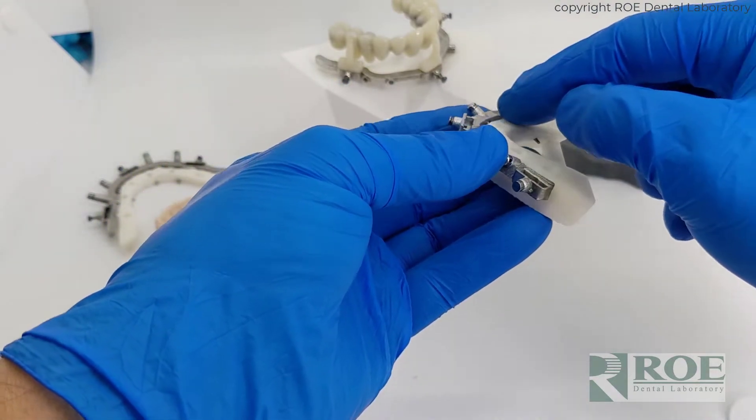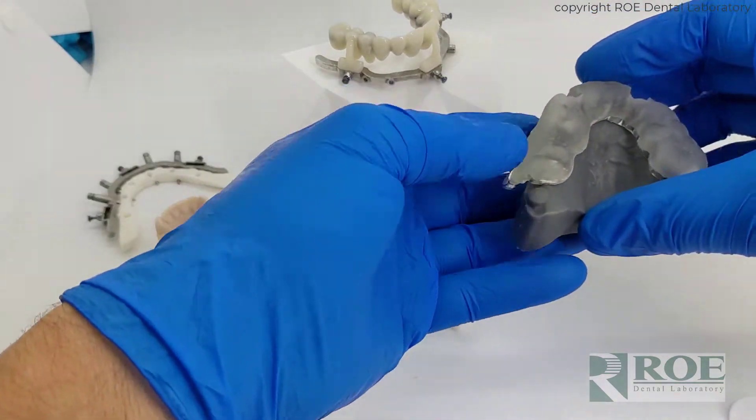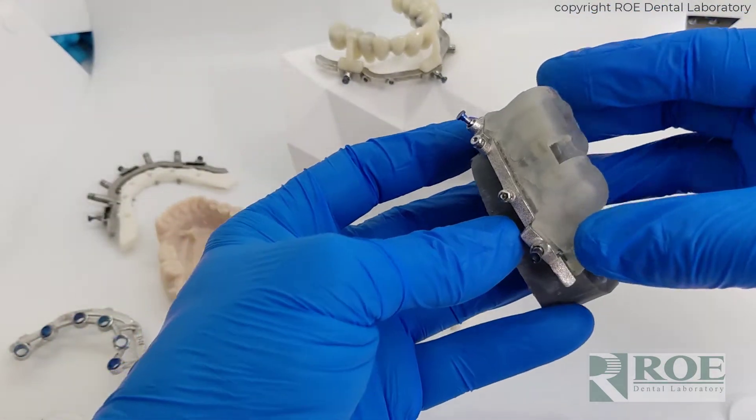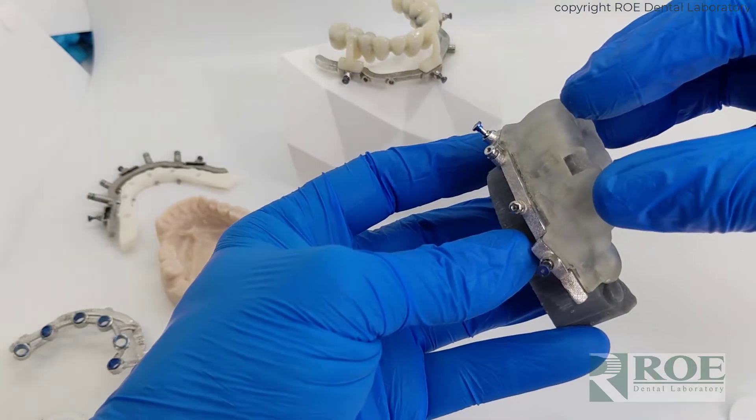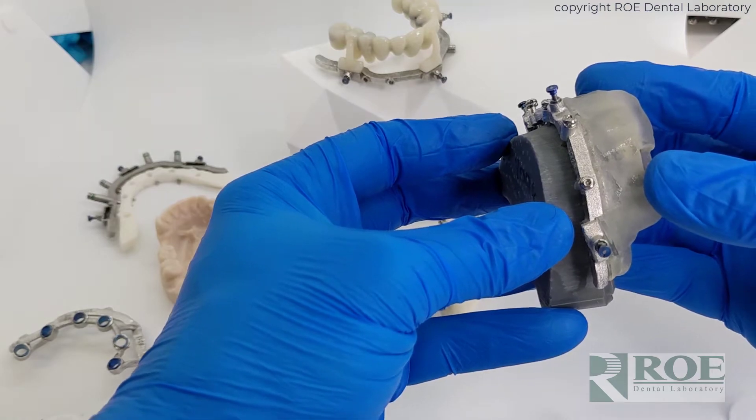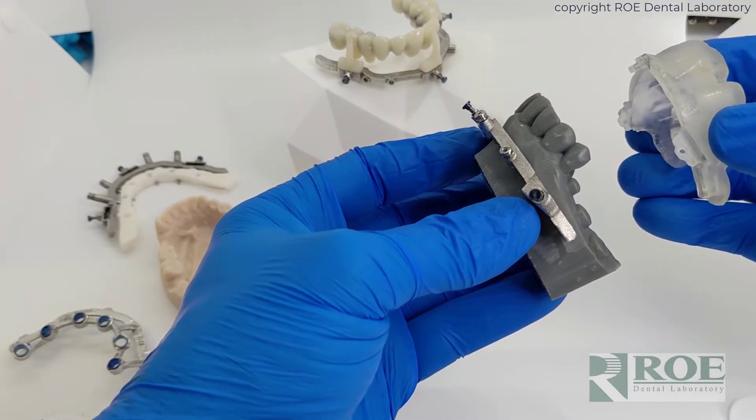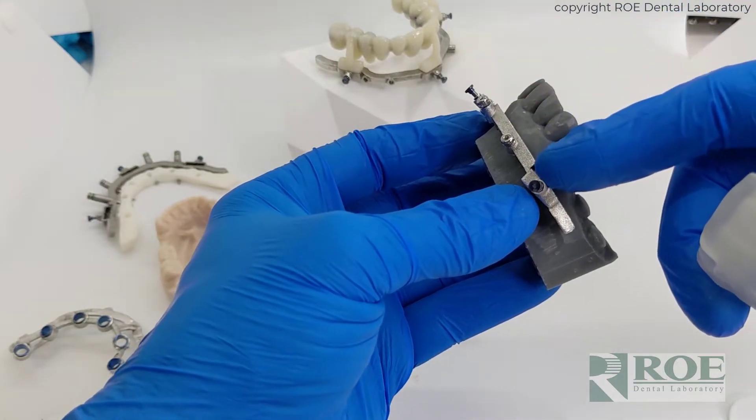Now what this means is that you do not have to reduce the bone to get the guide to seat. In fact, our fixation base is delivered via the pin guide to support it while it is attached with chrome locks to the fixation base. So you can see in this situation, there is some undercut, but we don't have to contact the bone.